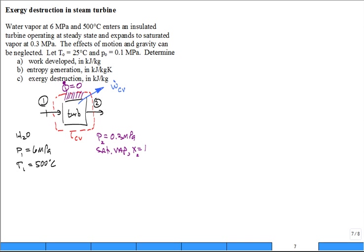First question: determine the work developed in units of kilojoules per kilogram. What symbol should I be looking to calculate? Is it W dot divided by m dot, or lowercase w? You can put a CV on that w if you want. Is that what I'm looking for?